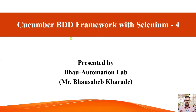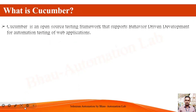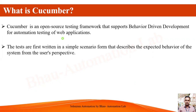We'll be using Selenium 4. Without wasting time, let's start with some theoretical part. First of all, let us understand what is meant by Cucumber. Cucumber is the open source testing framework that supports Behavior Driven Development for the automation testing of web applications. These tests are first written in a simple scenario form that describes the expected behavior of the system from the user's perspective.